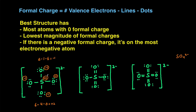Moving on to the second structure. We already know that the oxygens of the single bonds are going to have a formal charge of negative one, so I'll label those. And then the oxygens of the double bonds: six valence electrons minus the number of lines, which is two, minus the number of dots, which is four, giving us a formal charge of zero, so I'll label that as zero.